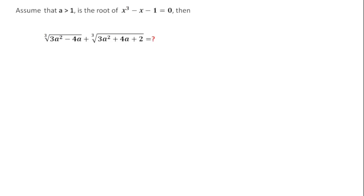Welcome to Definite Mind. In this question, the root of the equation x² - x - 1 = 0 is 'a', and a is greater than 1. We have to find the value of a given expression.